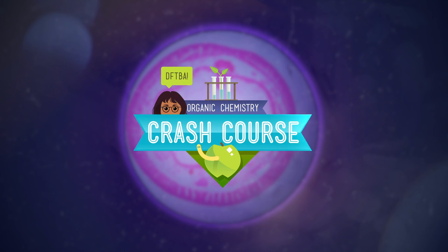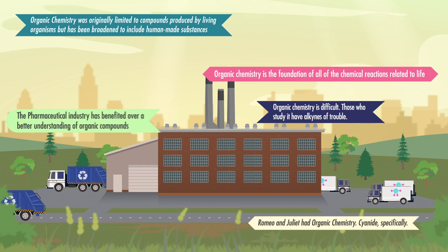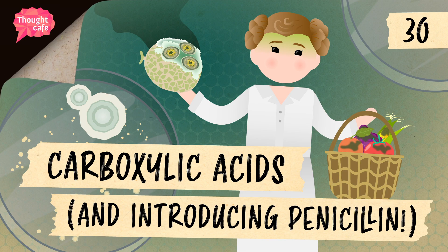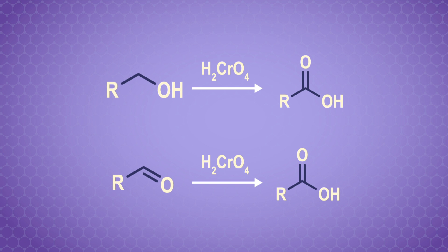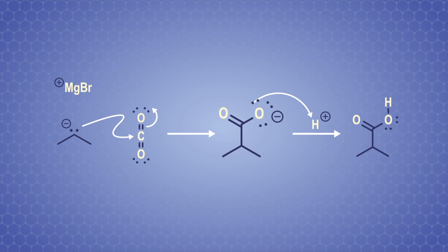Given these awful smells, you might wonder why we'd want to work with carboxylic acids at all. But we can actually make some pretty nice-smelling compounds using carboxylic acids as a starting point, and we can convert them into other useful compounds for organic synthesis. We can oxidize alcohols or aldehydes with chromic acid or another suitable oxidizing agent. We can also make them from Grignard reagents. Reacting the Grignard reagent with carbon dioxide gives a carboxylate salt, which can be protonated with acid to give a carboxylic acid.